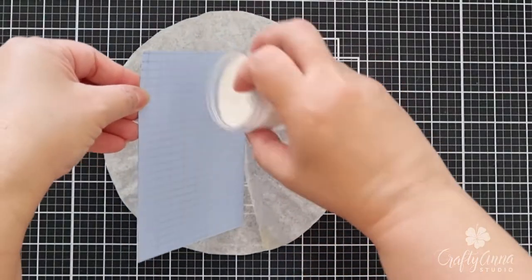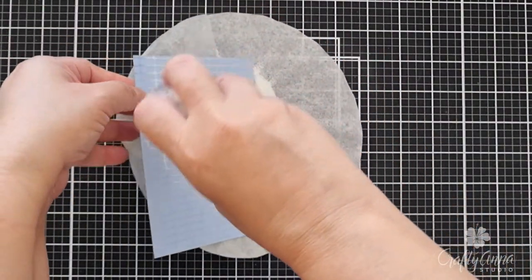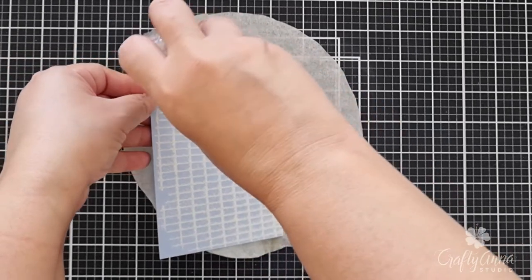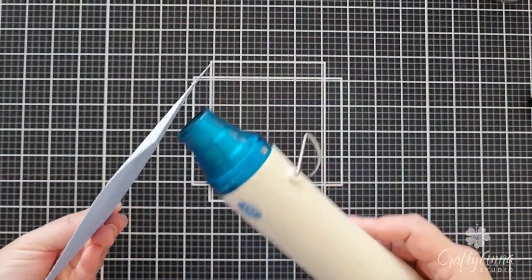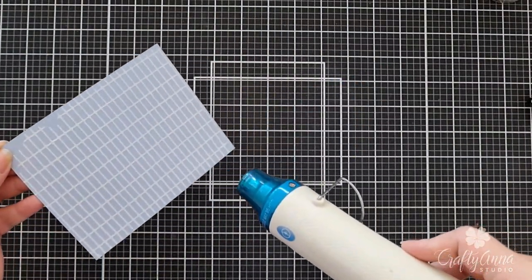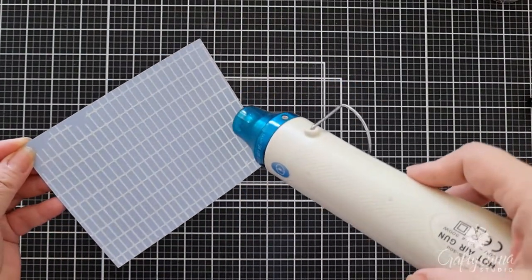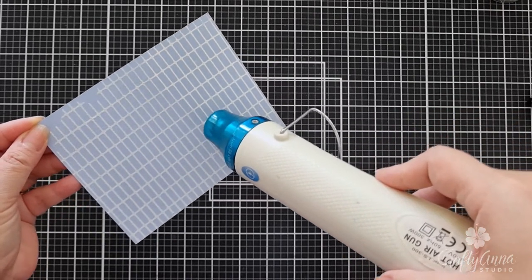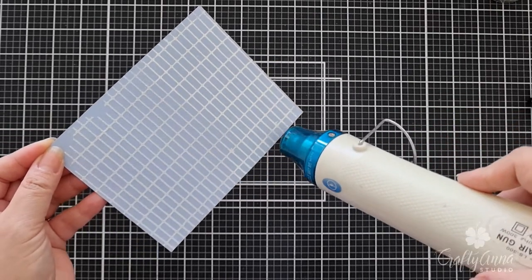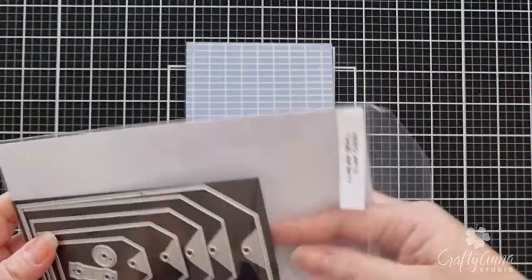I gently lift it up, then I take white embossing powder and sprinkle it generously all over the panel. I tap off the excess powder before taking the heat tool to the paper, starting at the back and moving it to the front. After heat setting the embossing powder, I will cut out the tags using the Hero Arts Infinity Tag die set.